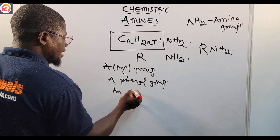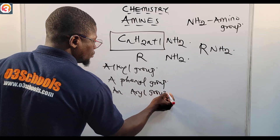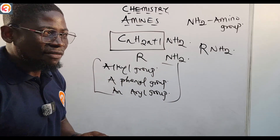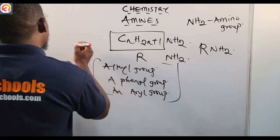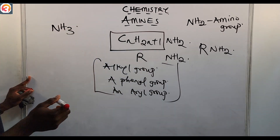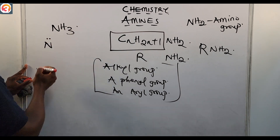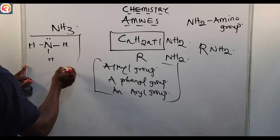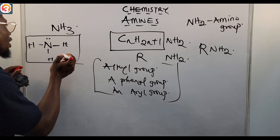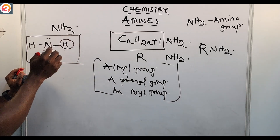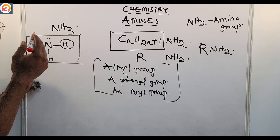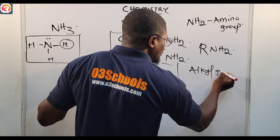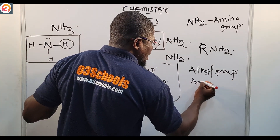An amine is derived from ammonia (NH₃), which has a lone pair of electrons. An amine is formed when one or more of the hydrogen atoms in ammonia have been replaced either by an alkyl group or by an aromatic group.